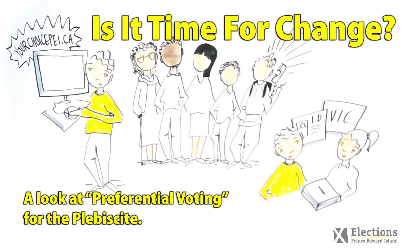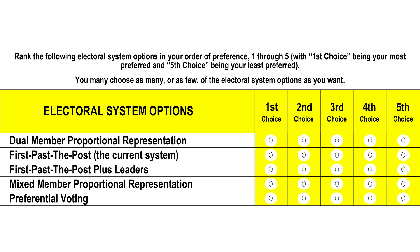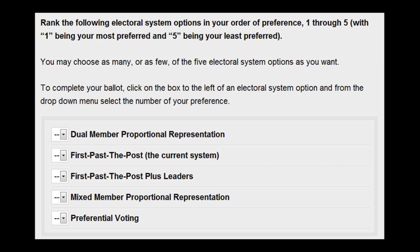In a preferential voting system, voters rank the options on a ballot in order of preference. This is a sample of what the preferential voting paper ballot will look like for the plebiscite. And here's an example of an online electronic ballot with drop-down menus with numbers for ranking the systems.